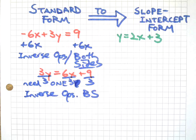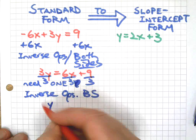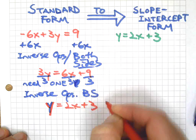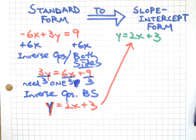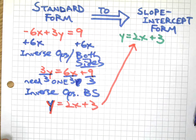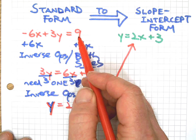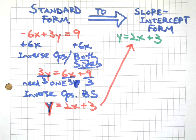Inverse ops both sides. BS means both sides. So I've got the Y. Y equals 2X plus 3, we did it. So we're just using our standard, very basic inverse operation problem-solving skills to change from one form to the other.